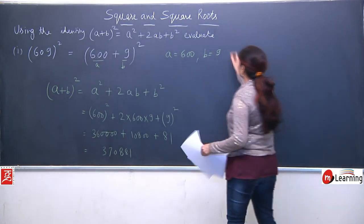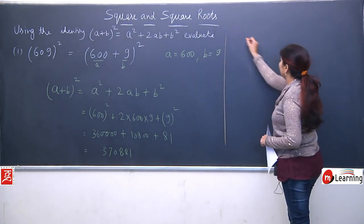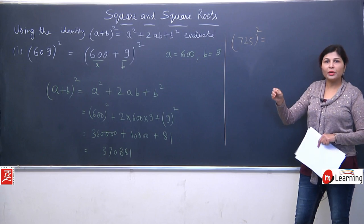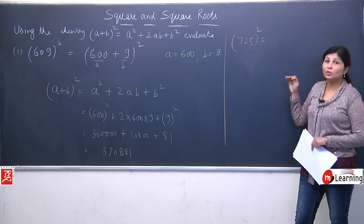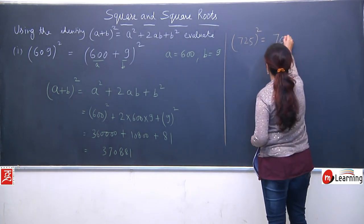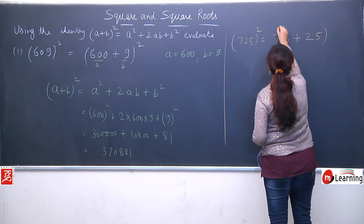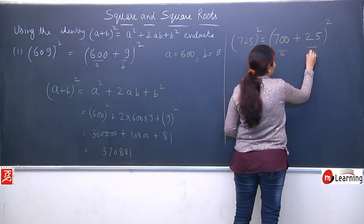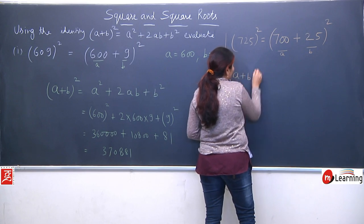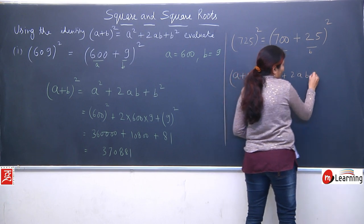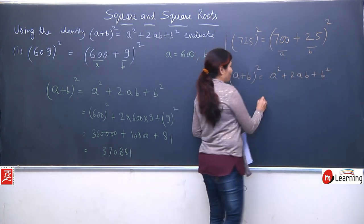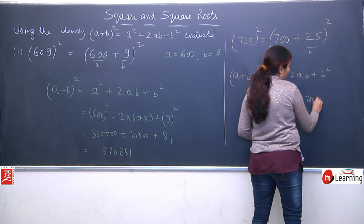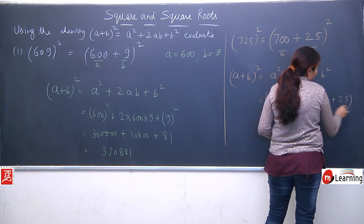So we'll take one more question. Next question is 725 whole square. We need to find 725 whole square. Here also you can directly multiply 725 by 725, but we will not prefer that because it would be more complicated. So what we will do — we will split this term. 725 I can write as (700 + 25) whole square. Like the previous question, this is a and this is b. So now we will apply (a+b)² which is equal to a² + 2ab + b².